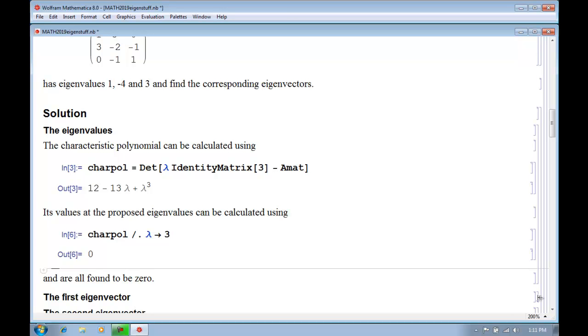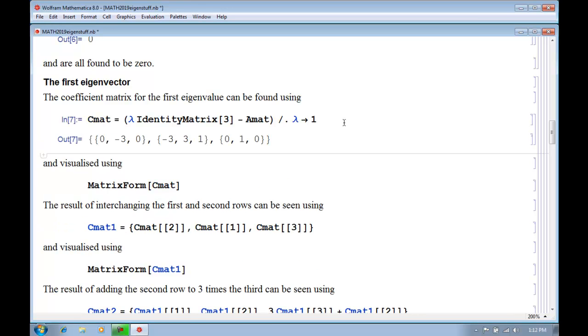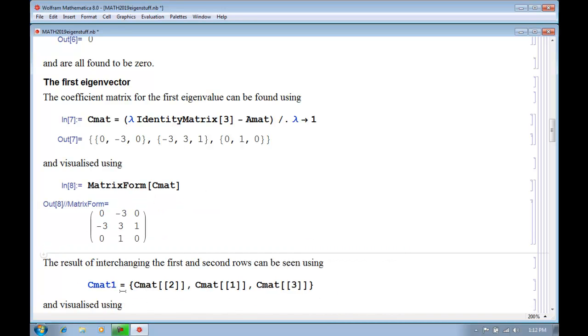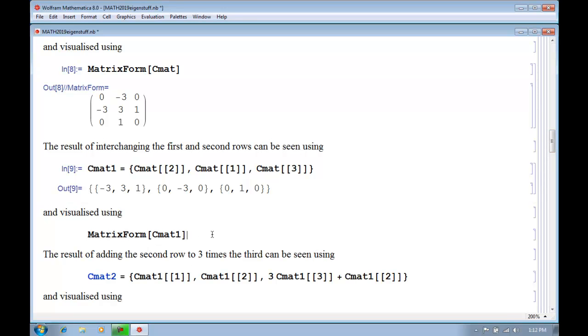Now we've got to calculate the eigenvectors. So we start off by taking this matrix whose determinant we found and evaluate it for the first eigenvalue. And we can look at that as a matrix like that. And we now want to try and find the solutions of this matrix times a vector equals 0. And we do this by the usual row reduction. And the first thing we do is to interchange the first and the second rows, which we can do using this, and check that we can visualize that there.